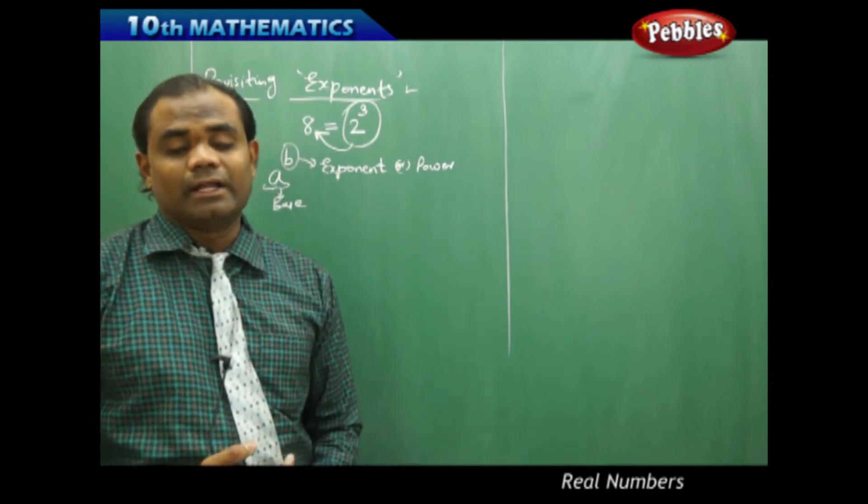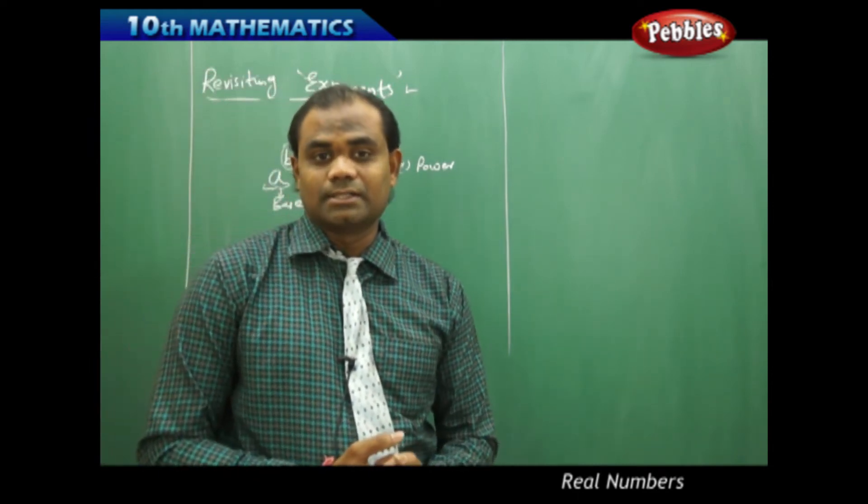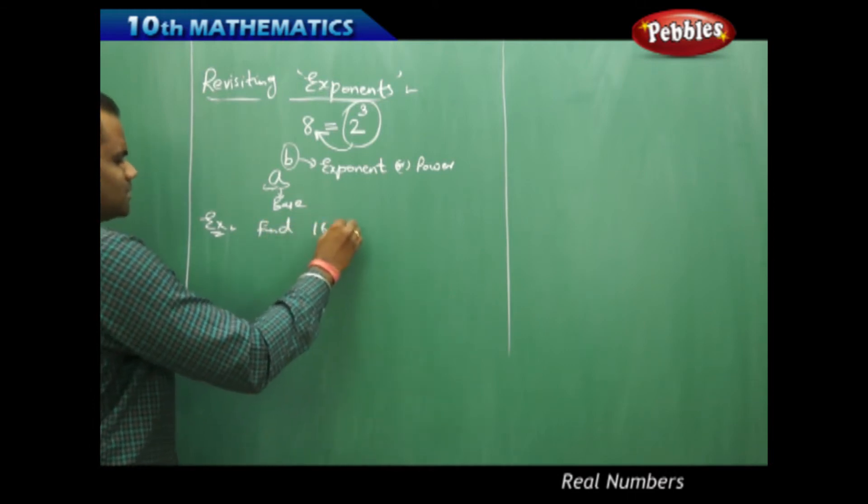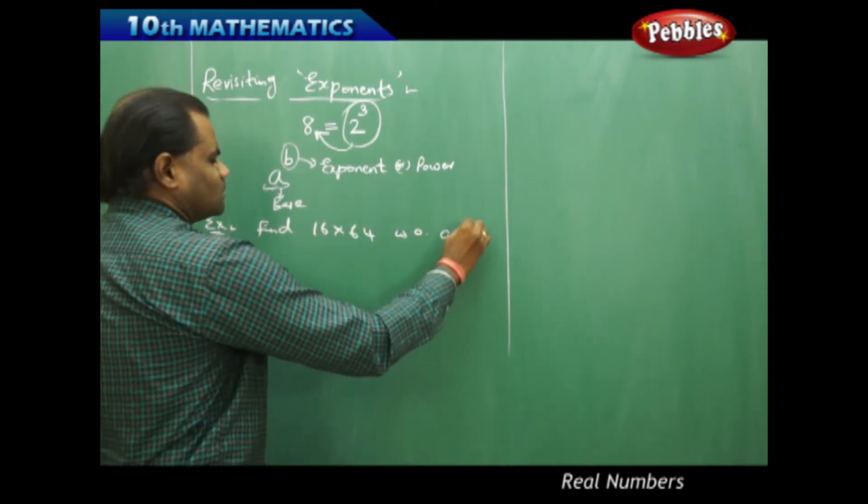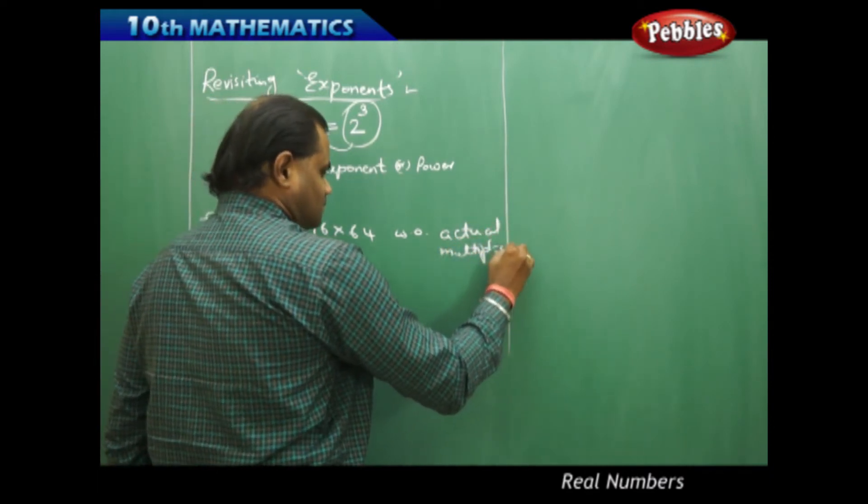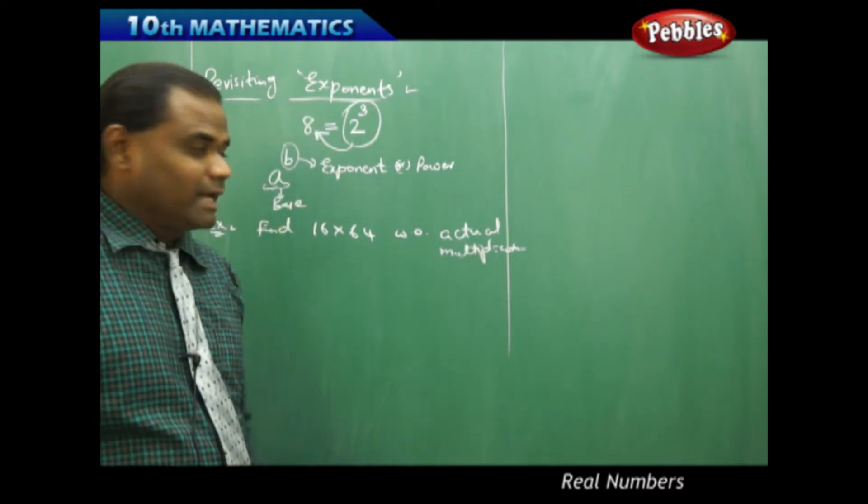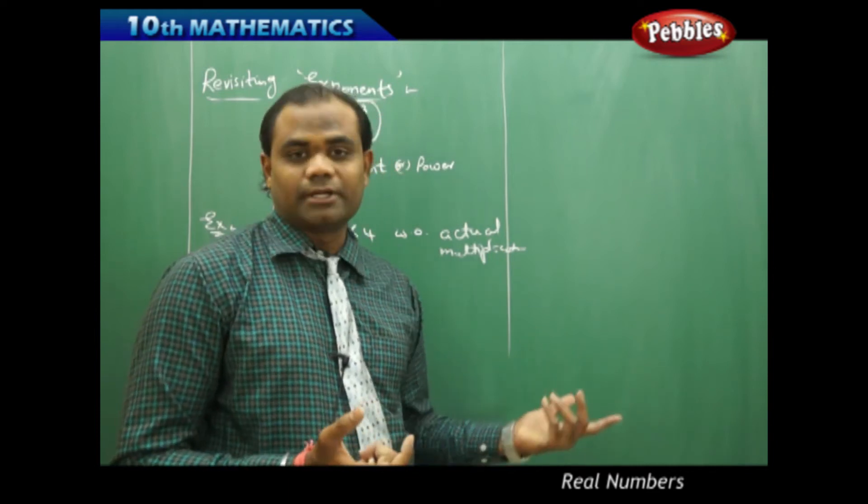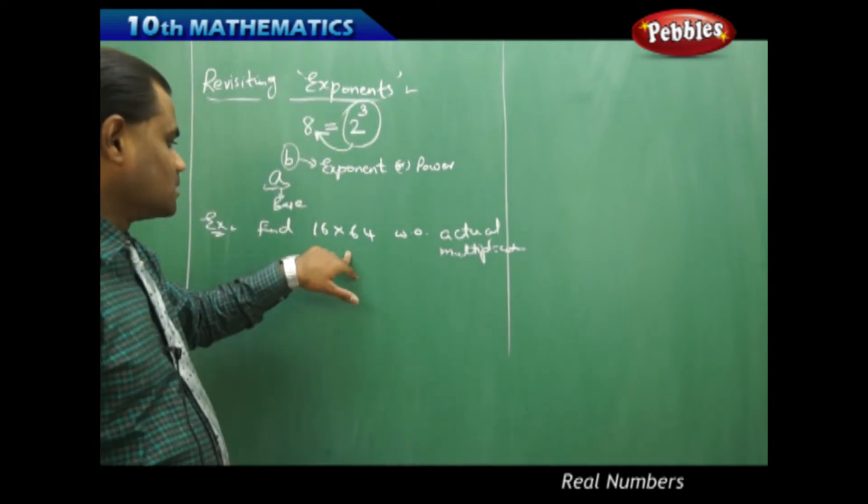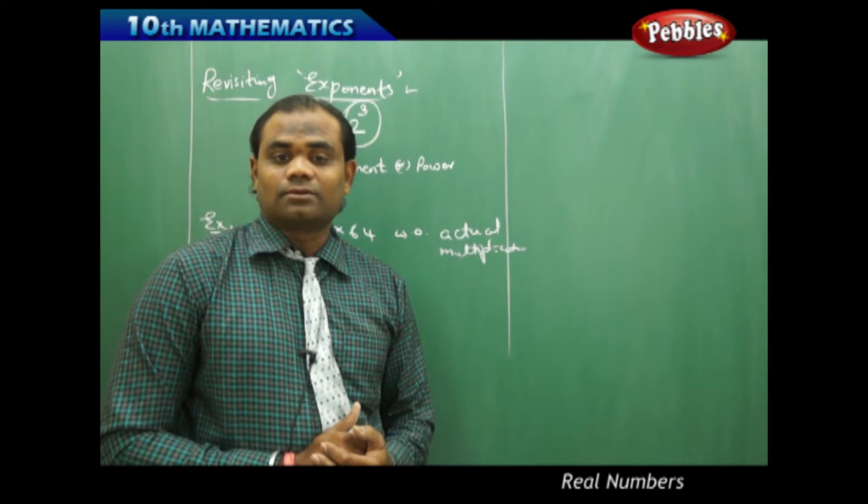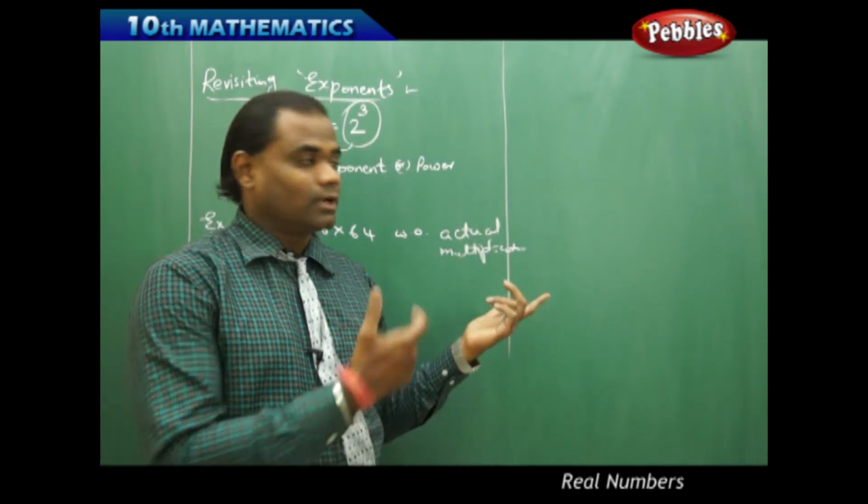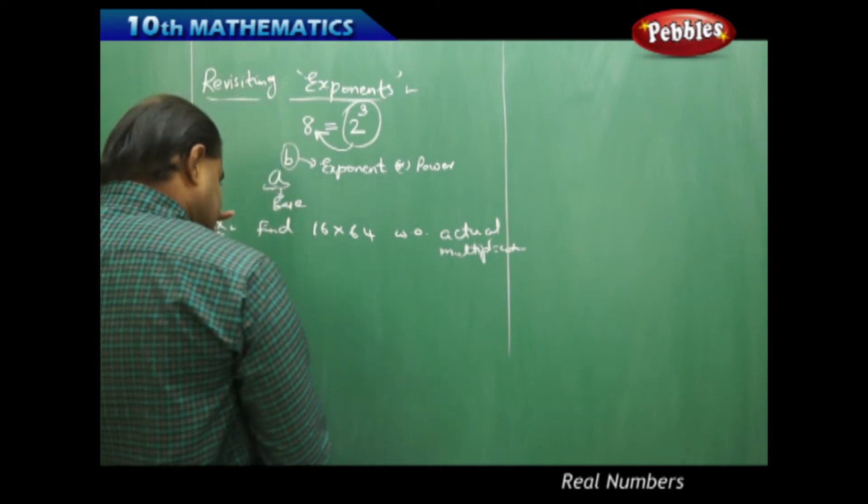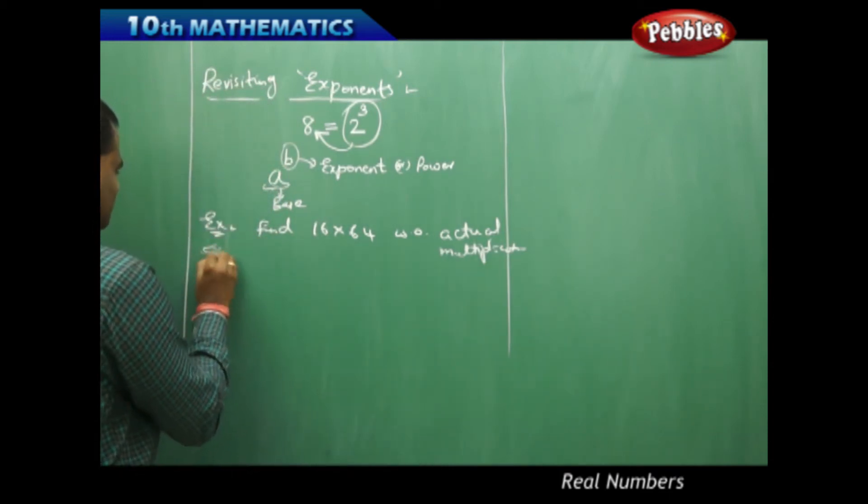Exponents help us in simplifying the values usually when multiplications are considered. For example, if my question is to find 16 times 64 without actual multiplication. The actual multiplication would be quite easy if you take a calculator, but if my question was to find this without actual multiplication, then that would definitely include exponents connected to identifying the value of the multiplication, 16 times 64.